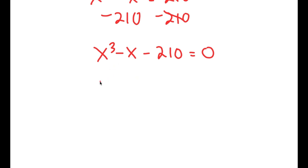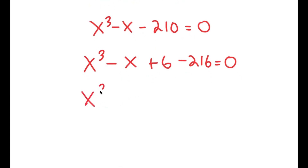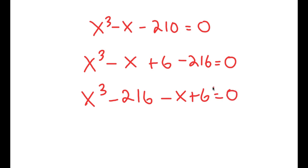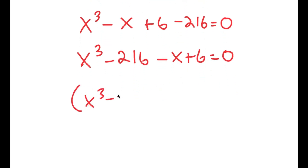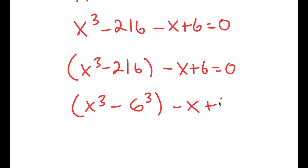From here, I'm going to rewrite this as x to the power of 3 minus x plus 6 minus 216 is equal to 0. So I rewrote negative 210 as 6 minus 216. The reason I did this is because I can reorder this as x to the power of 3 minus 216 minus x plus 6 is equal to 0, and group x to the power of 3 minus 216 together. Now, 216 is the same thing as 6 to the power of 3, so I get x to the power of 3 minus 6 to the power of 3 minus x plus 6 is equal to 0.